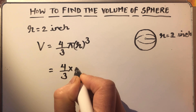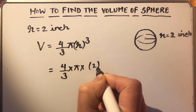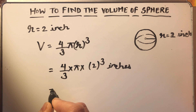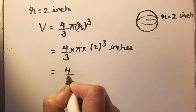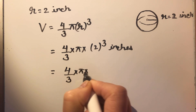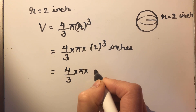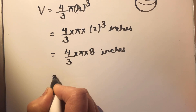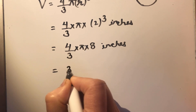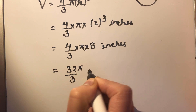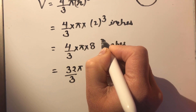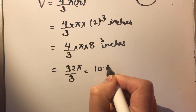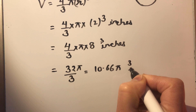4 over 3 times pi times R, which is 2 inches. So this will be 4 over 3 times pi times 2 cubed. 2 cubed is 8. So this will be 4 times 8, which is 32 pi over 3. So this will become 10.66 pi cubic inches.